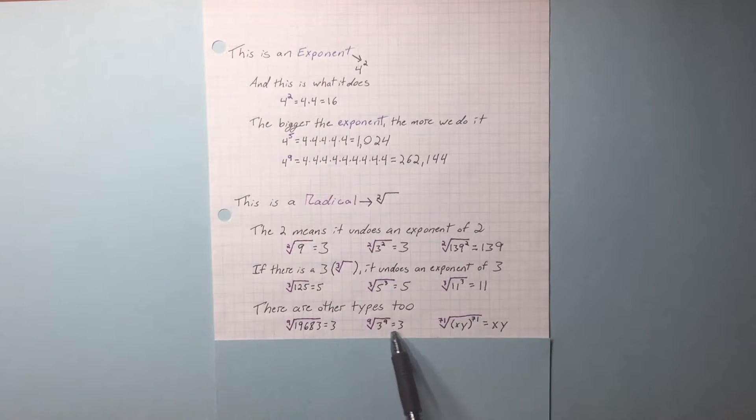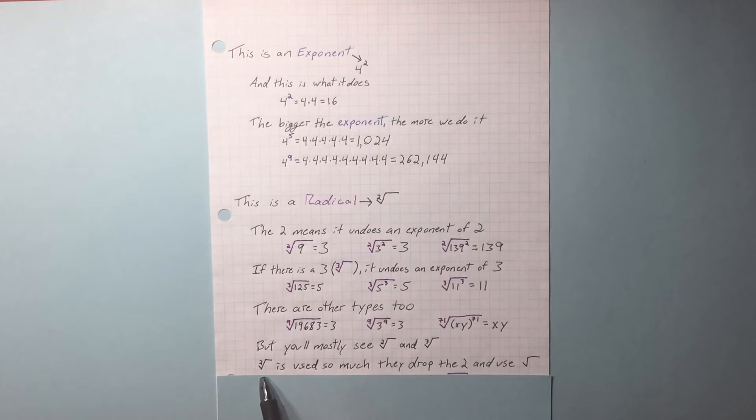You can have the 9th root or the 71st root. You'll mostly see this square root of 2 and square root of 3. In fact, the square root is used so much they just drop the 2.